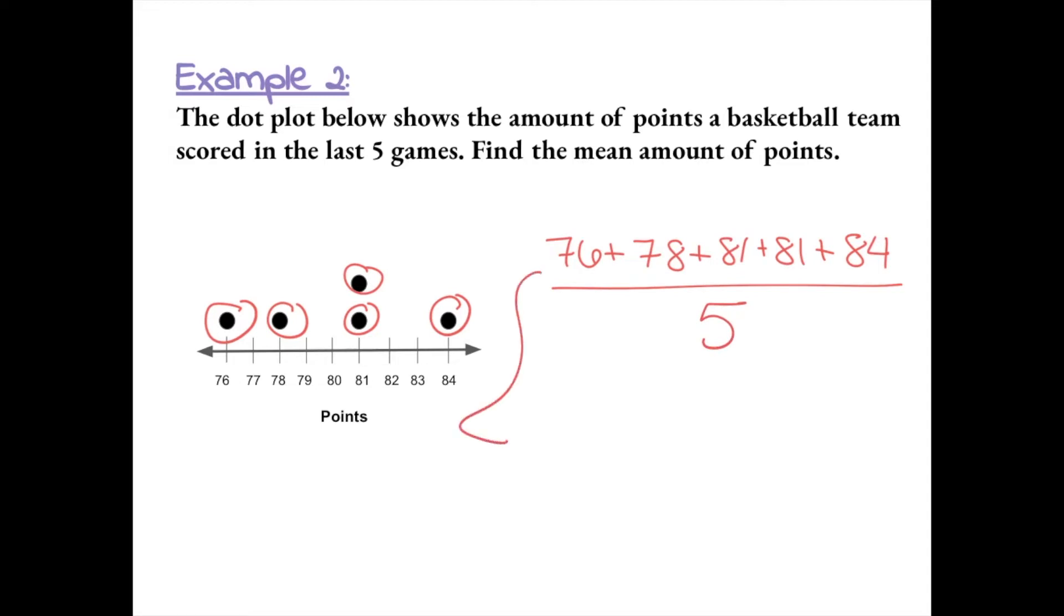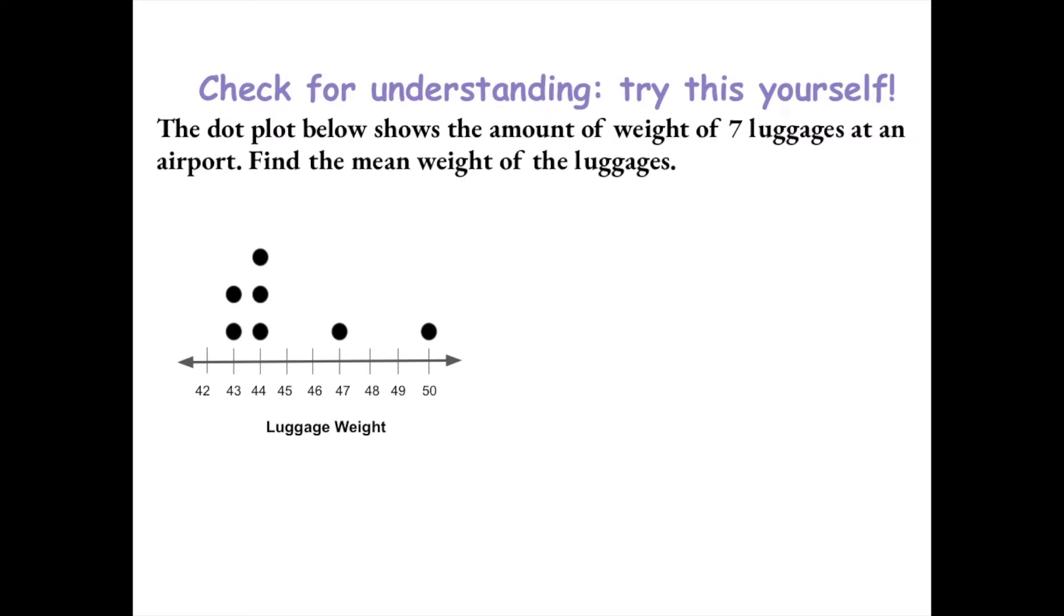So the sum of all of these numbers added together is 400. So we have 400 divided by five, which equals 80. So they scored on average 80 points. Try this one yourself to check for understanding, and then check your answer as you continue the video.